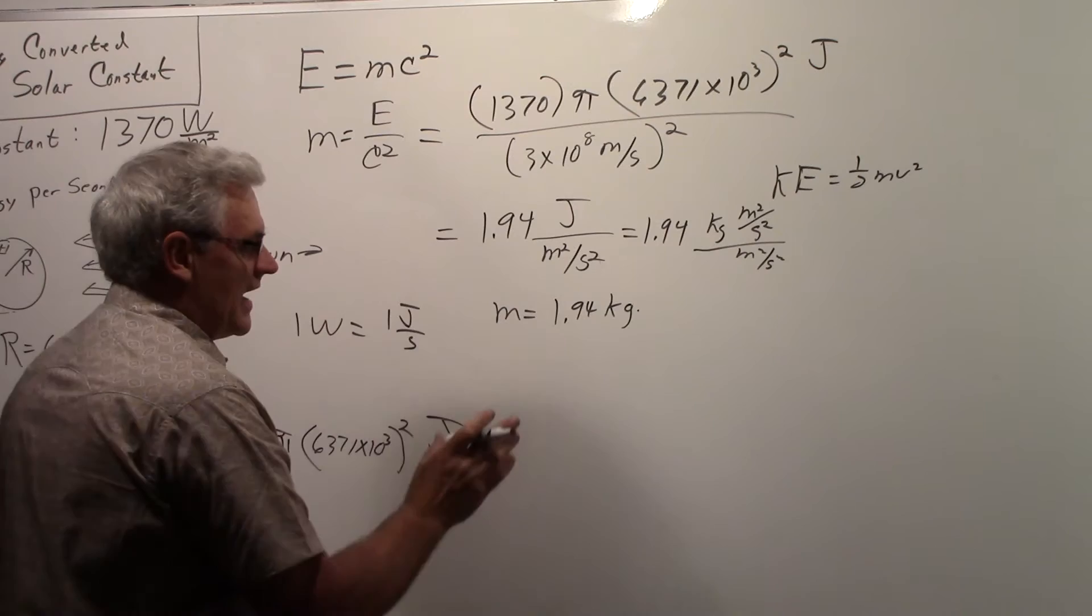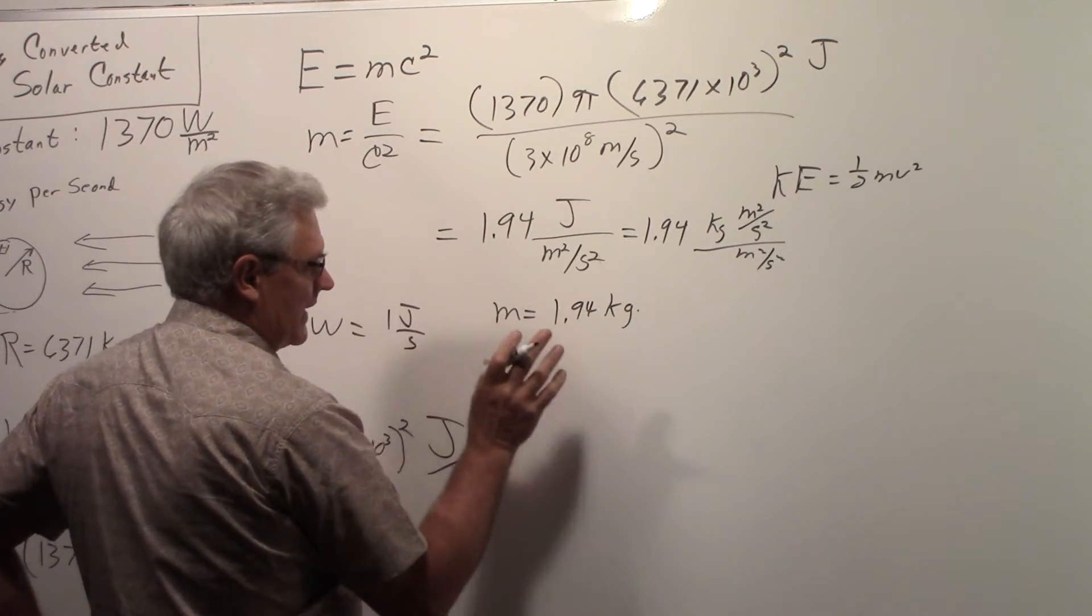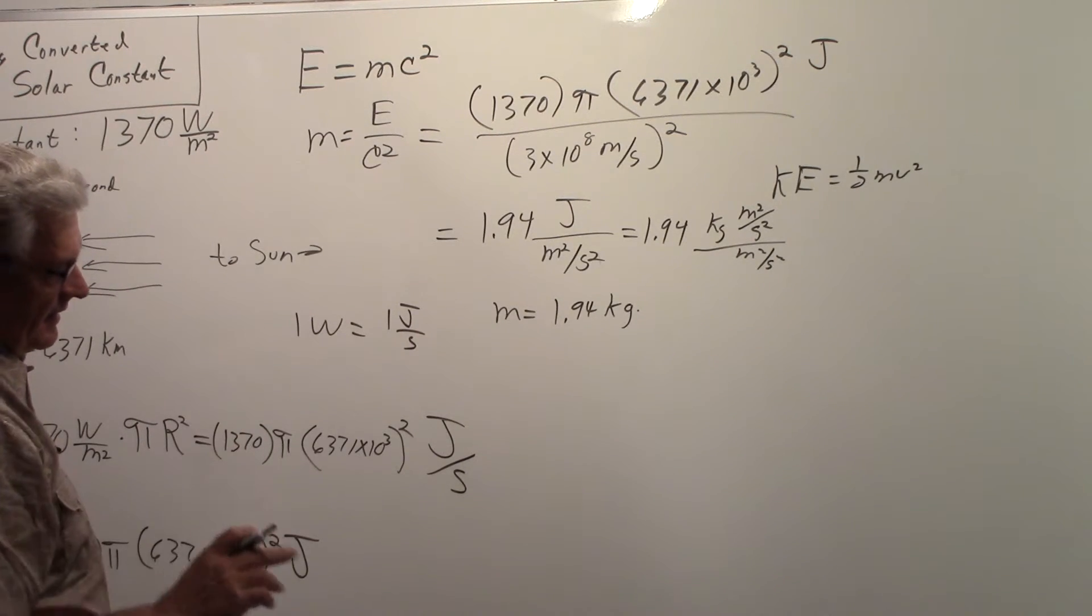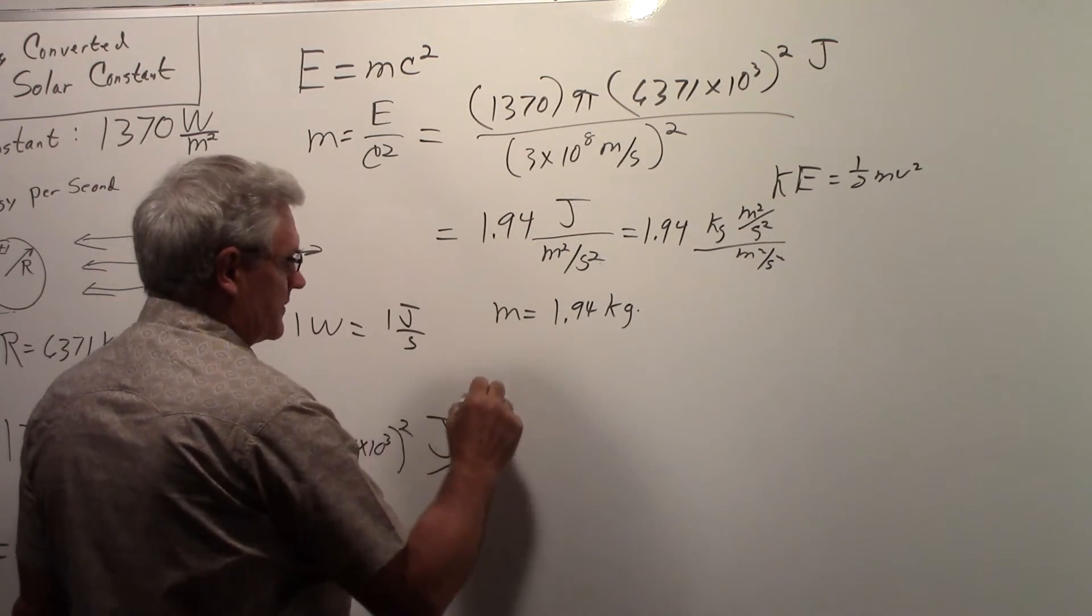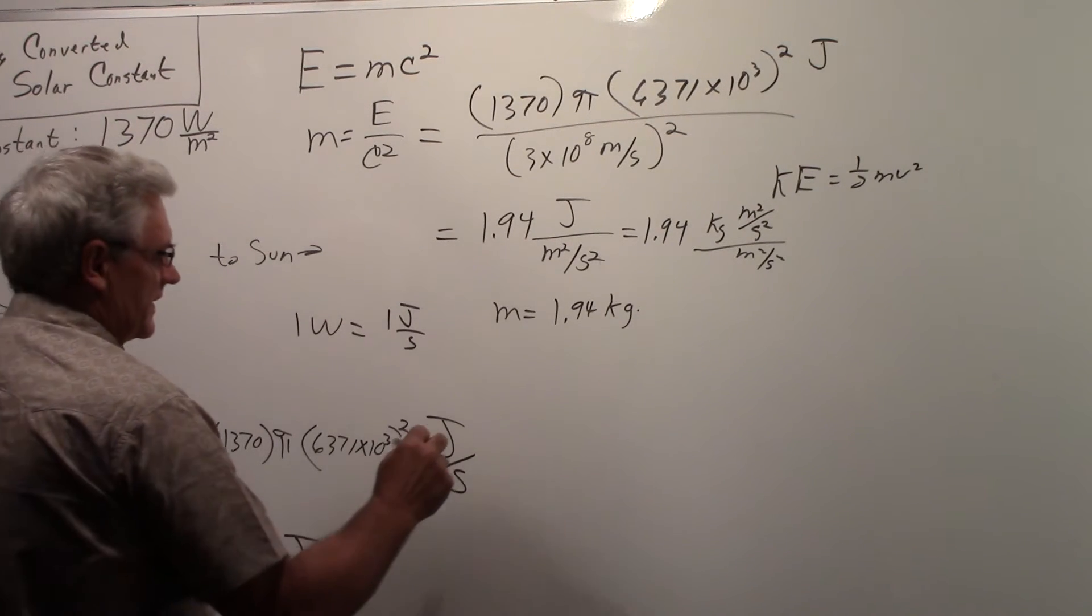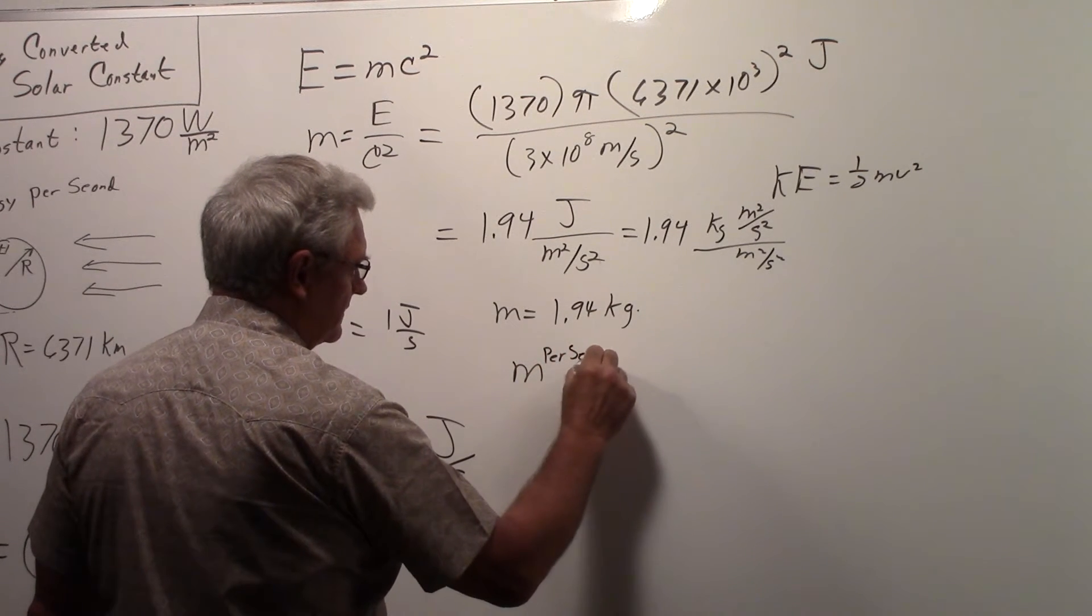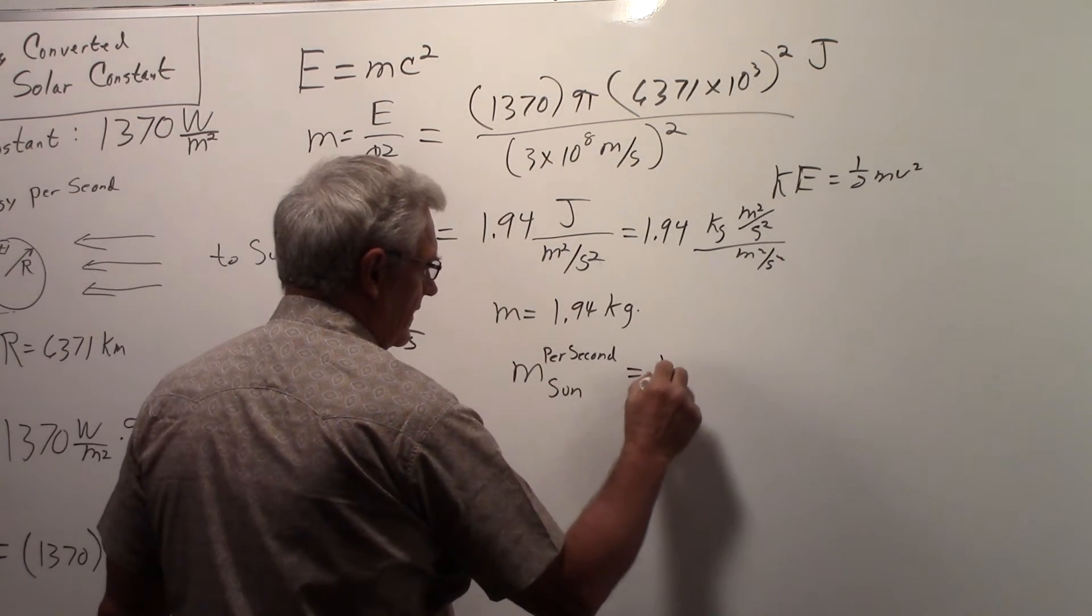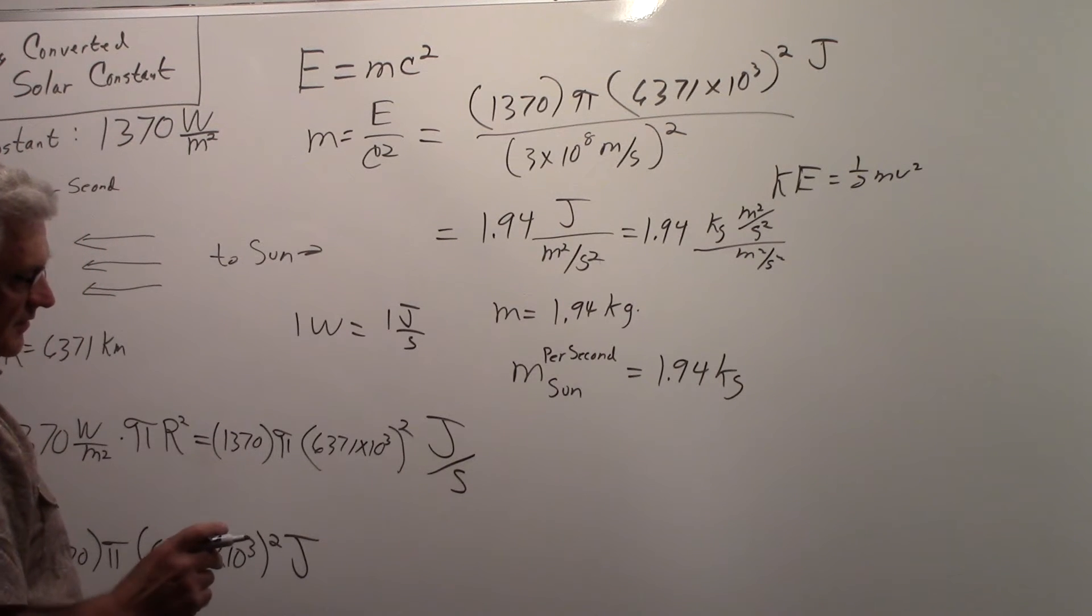So that is how much mass of the sun per second that is being burned to produce the energy that's in the solar constant over the entire Earth. So a better way to write this would be to explicitly say this is the mass per second of the sun that's being converted to the energy that's in the solar constant being intercepted by the Earth.